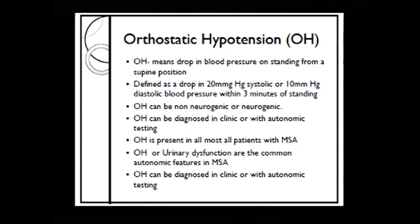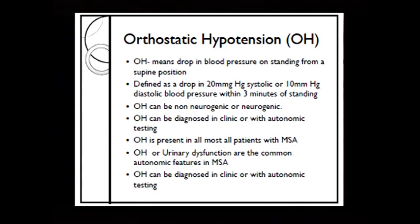Orthostatic hypotension can be neurogenic or non-neurogenic. For example, if I don't drink water for a couple of days or you take some blood from me, I'll have a drop in blood pressure when I stand — that has nothing to do with the nervous system, I'm just dehydrated. Neurogenic is where a neurological problem is actually causing that drop when you stand up. It can be diagnosed in clinic with a simple test: lie down, get your blood pressure, stand up, get your blood pressure again, and look at the numbers.